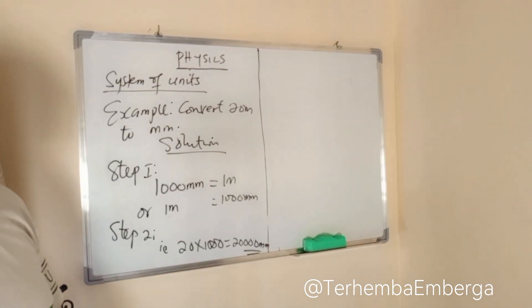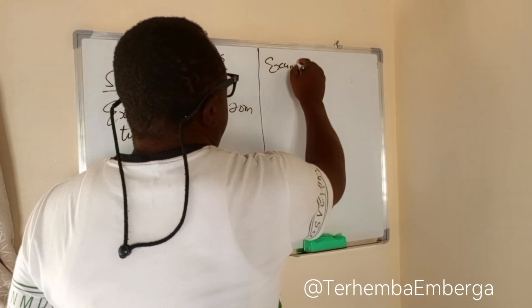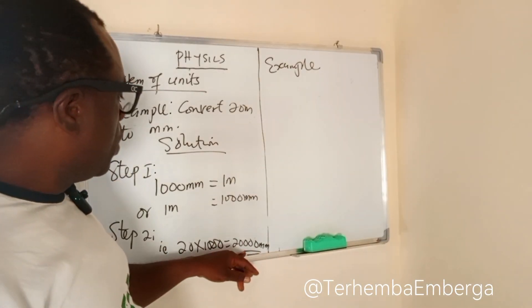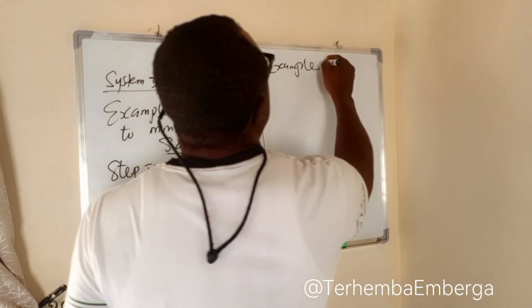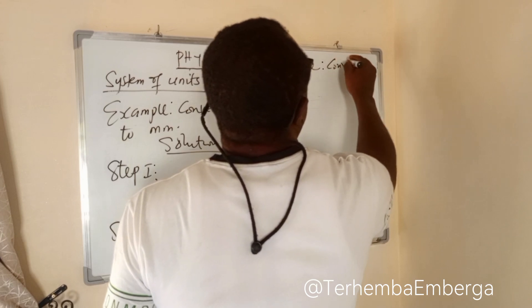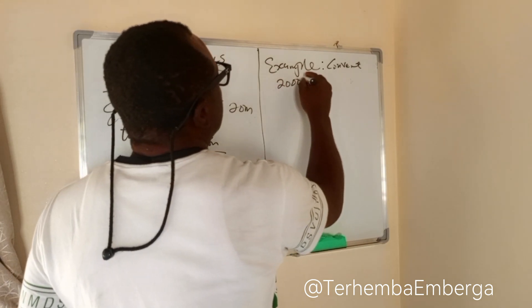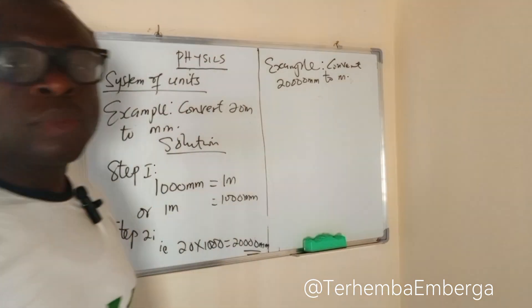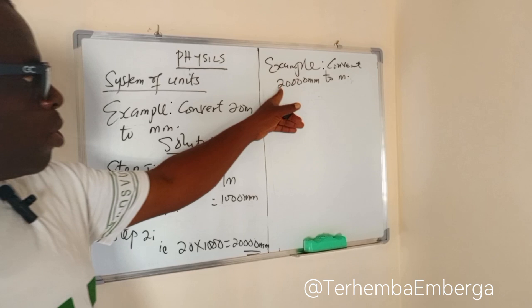The other way around is if you are asked to convert from a small unit to a big unit, what do you do? Example, convert 20,000 millimeters to meters. In this case, we have already known the relationship. So converting from a small to a big unit, you simply divide 20,000 by 1,000.